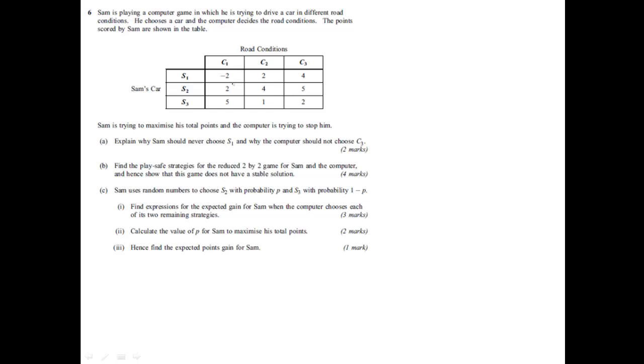It dominates because it's always better or the same as. So we write up here S1 dominated by S2. And probably worth writing the values. So minus 2 is less than 2. 2 is less than 4. And 4 is less than 5.